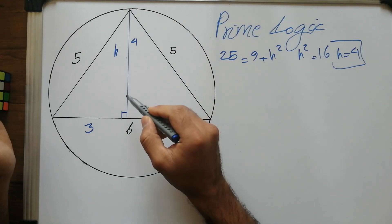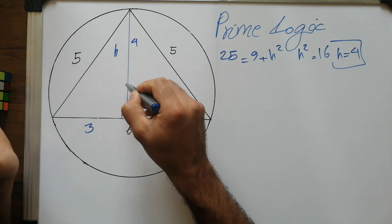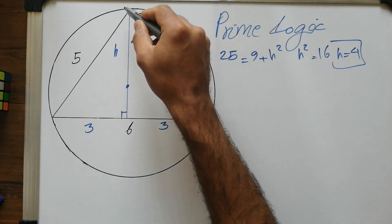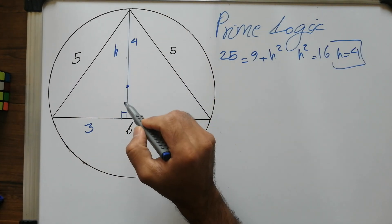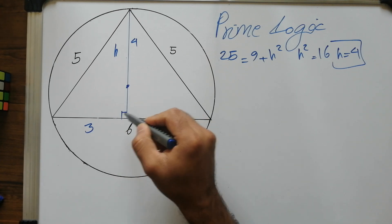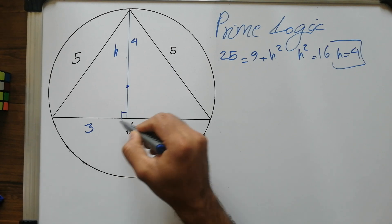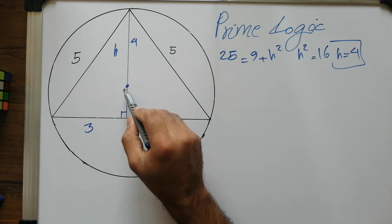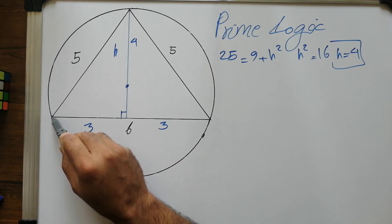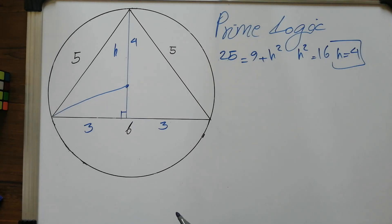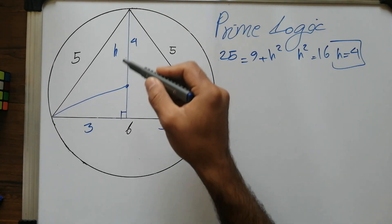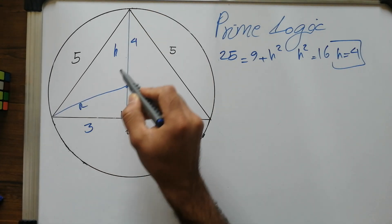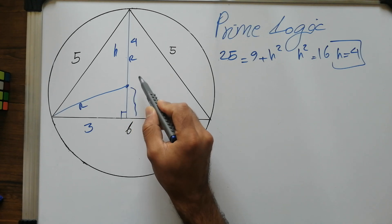Now, based on the property that a chord's perpendicular bisector must pass through the center of the circle, this height line passes through the center. So at some point along this height line is the center of the circle. Let's draw another radius from the center to a vertex. The full height is 4, and this new radius is r, so the remaining segment from the base midpoint to the center is 4 minus r.